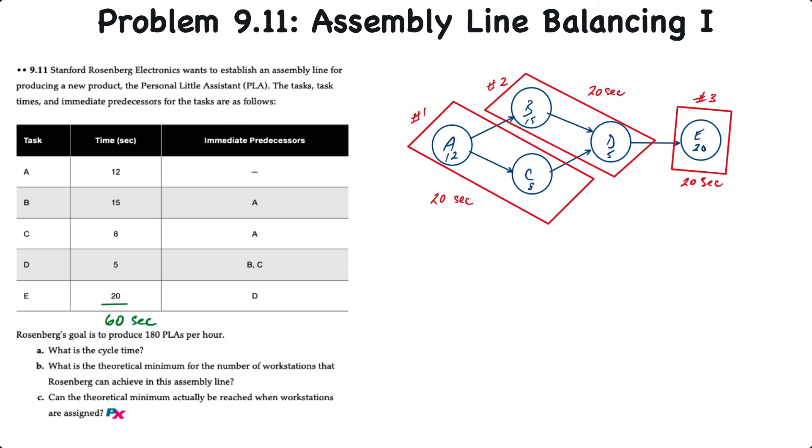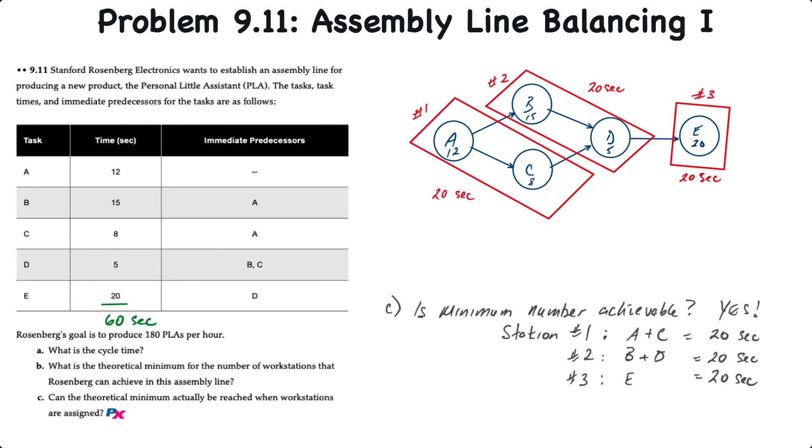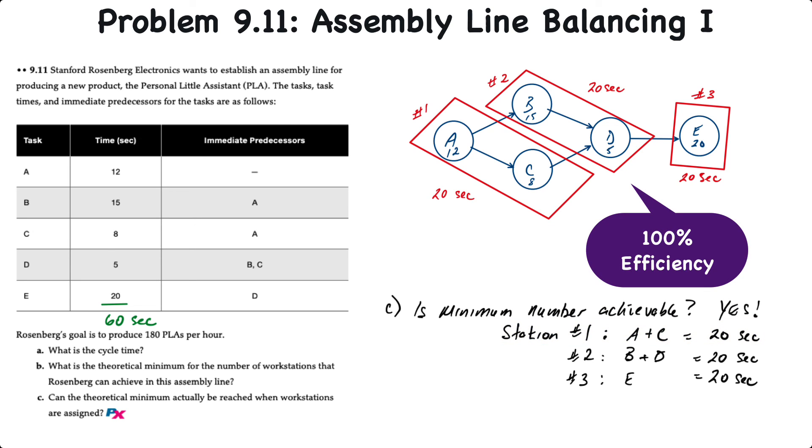So were we able to achieve the minimum number of workstations? We calculated that number to be 3, and we definitely were able to group our tasks into 3 workstations. So yes, we did achieve the minimum number. We've got station 1 that contained tasks A and C for a total of 20 seconds, station 2 consisting of tasks B and D for 20 seconds, and station 3 with task E on its own for 20 second workstation time. And because none of the workstations have any idle time, we can say that this is a 100% efficient assembly line. And that's how you calculate cycle time, theoretical minimum number of workstations, and balance a simple assembly line.